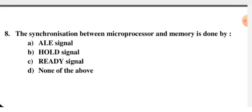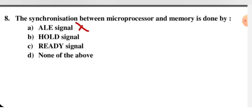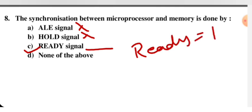Next question: the synchronization between microprocessor and memory is done by which signal? ALE is for demultiplexing the address latch — not correct. HOLD is for DMA control. READY is the correct option: when READY = 1, the peripheral device is ready to transmit data to the microprocessor, enabling time synchronization. So READY is the correct answer.